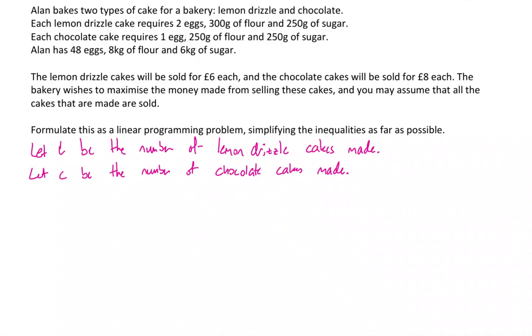We now need an objective function. Alan wants to make as much money as possible, maximize the money made. So we want to maximize, let's say, P for profit. The cakes are going to be sold at £6 each for lemon drizzle, so £6 times the number of lemon drizzle cakes, which is l, plus £8 for the chocolate cakes, so £8 times the number of chocolate cakes, which is c. So that's my objective function.